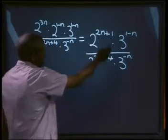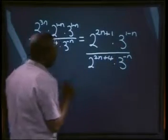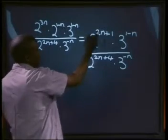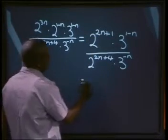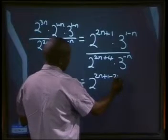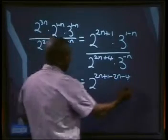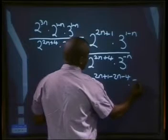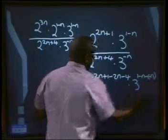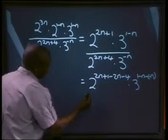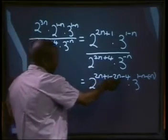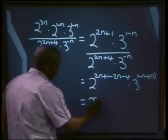The bases are the same in the numerator and denominator. Since we are dividing, we apply the second law: if the bases are the same, we simply subtract the exponents. That gives us 2 to the power of 2n plus 1 minus (2n plus 4), multiplied by 3 to the power of 1 minus n minus (minus n). The 2n terms cancel, leaving 2 to the power of minus 3.